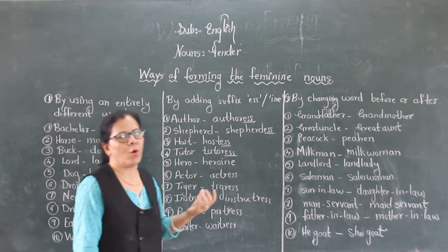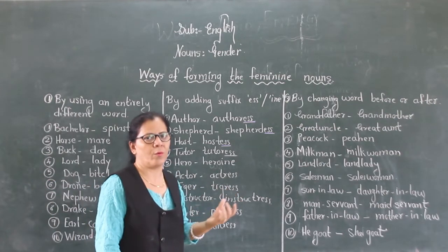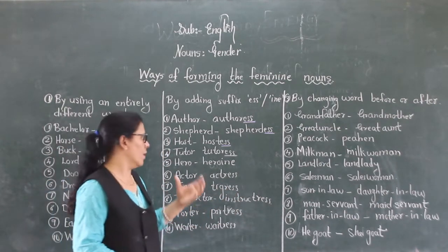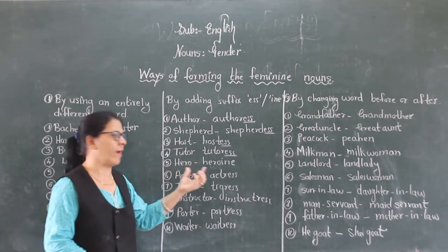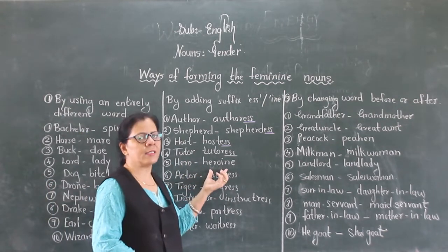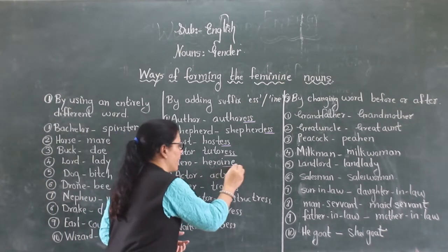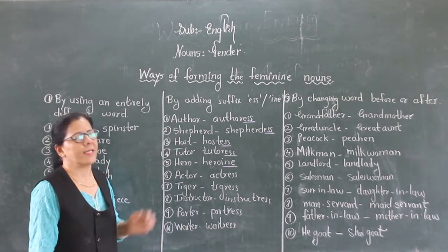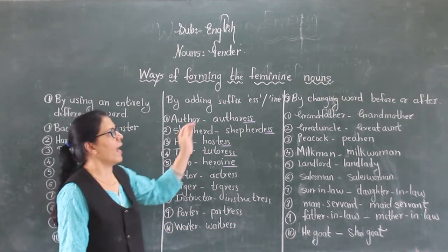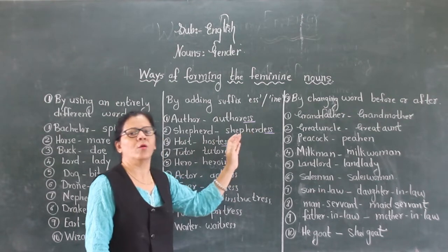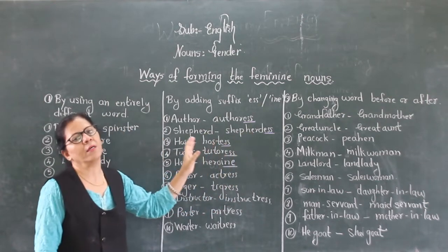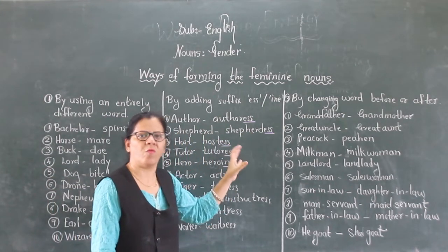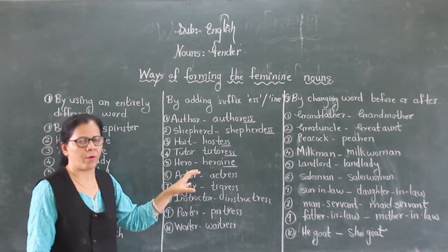Hero, heroine — you all know hero, one who acts in films. A male is hero and a female is heroine. So we can essentially form the feminine by adding a suffix after the masculine noun to form a feminine noun.